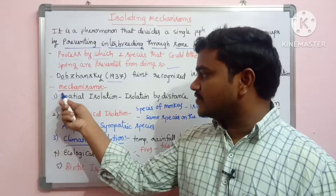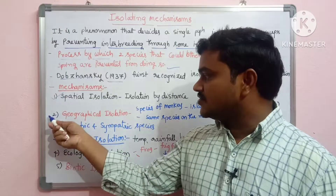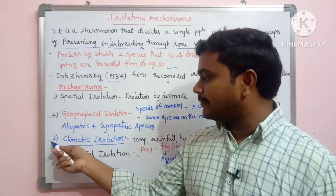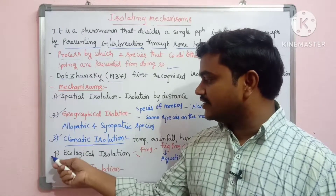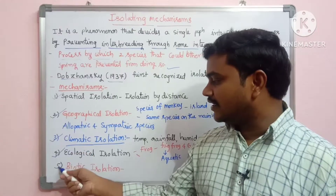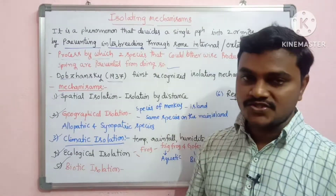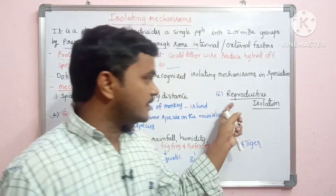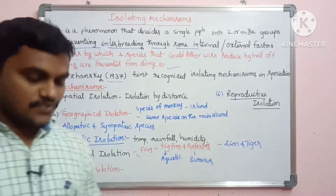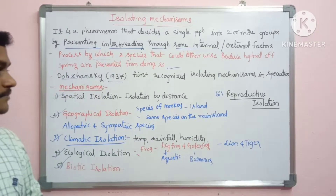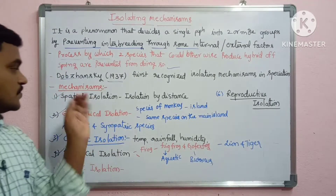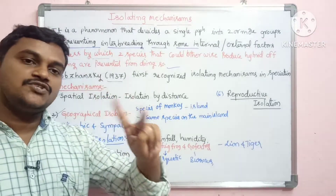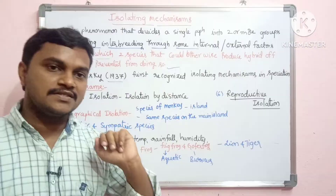The first type is Spatial Isolation, then Geographical Isolation, Climatic Isolation, Ecological Isolation, and Biotic Isolation. Finally, there is Reproductive Isolation. Here we will talk about spatial isolation between two species.